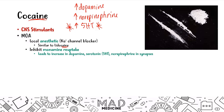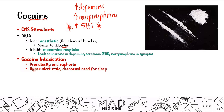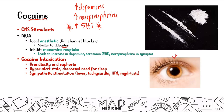Cocaine intoxication presents very similarly to amphetamine intoxication: grandiosity and euphoria, a hyperalert or stimulated state, and sympathetic stimulation including fever, tachycardia, hypertension, and mydriasis. You are also going to see tactile hallucinations, which can present with anxiety and paranoia and might mimic psychosis. These tactile hallucinations differentiate cocaine from amphetamine intoxication.